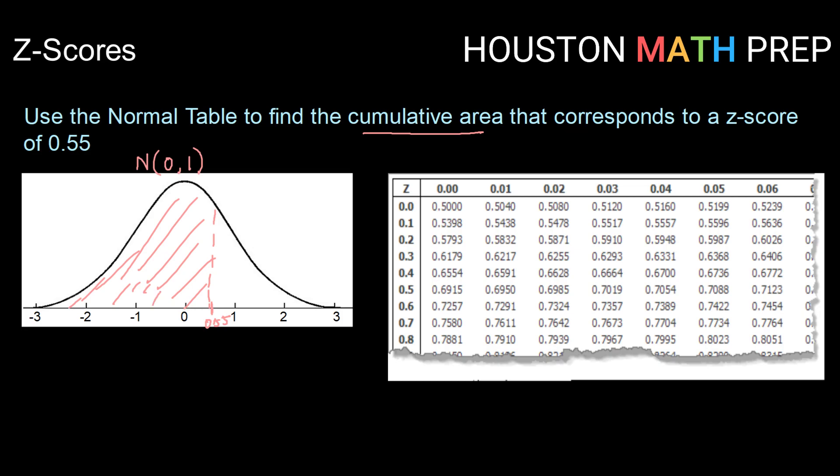Now one thing that we know, just based on our knowledge of normal distributions, is that the area to the left of 0 is 50% or 0.5. So just thinking through, we expect the area below 0.55 to be slightly more than 50%. So how do we use this table to find area?